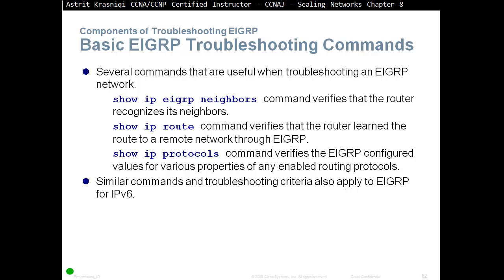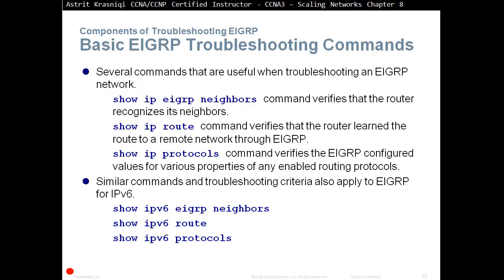Similar commands and troubleshooting criteria also apply to EIGRP for IPv6. We have Show IPv6 EIGRP Neighbors, Show IPv6 Route, and Show IPv6 Protocols. The first command finds all our neighbors — do we have all the neighbors we're supposed to? Show IPv6 Route tells us whether we receive all the routes from each neighbor. Show IPv6 Protocols lets us see whether attributes like the autonomous system number or K values match. The troubleshooting can happen from there.